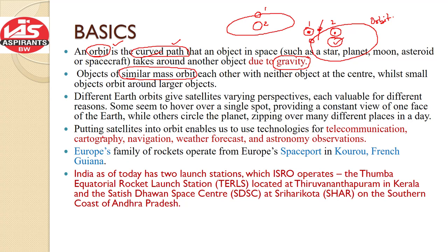What is the advantage of putting artificial satellites? Stars, planets, moons, and asteroids are our natural satellites, but we also put artificial satellites into orbits for various applications. For instance, we have telecommunication, cartography — that is map making and Earth observation — navigation, weather forecasting, and astronomy observations. These are the various applications of putting artificial satellites into orbits.